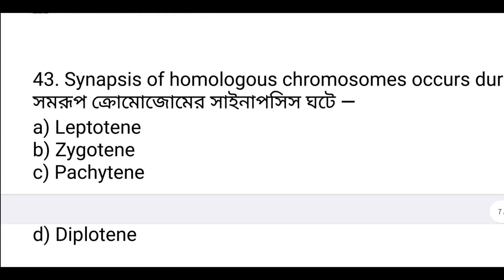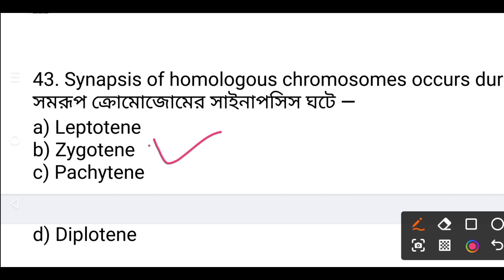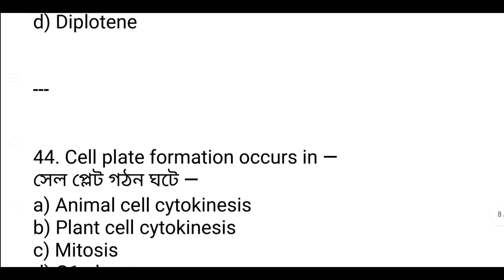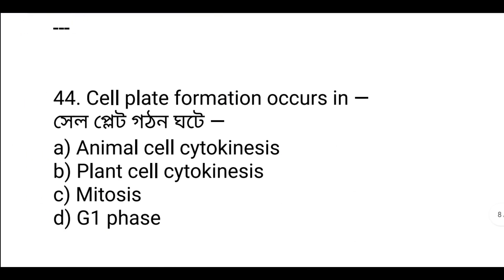Question: Synapsis of homologous chromosomes occurs during which phase? The answer is pachytene — pachytene involves homologous chromosomes and genetic recombination. The cell plate is formed during plant cell cytokinesis.